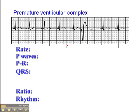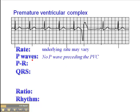The heart rate and the underlying rhythm may vary — it may be normal, fast, or slow. Where there's a premature ventricular complex, there's no P wave preceding the PVC. You'll notice that there's no P wave here; this is actually a T wave here, so we don't see any P wave. The PR interval where the PVC is concerned is not applicable.